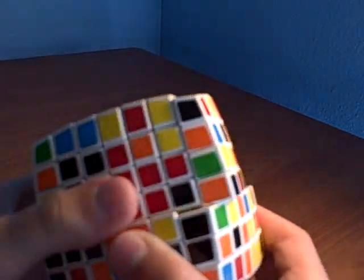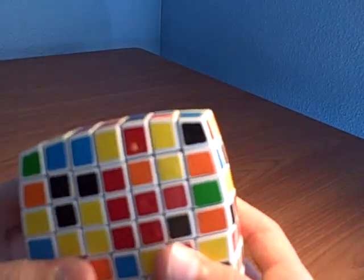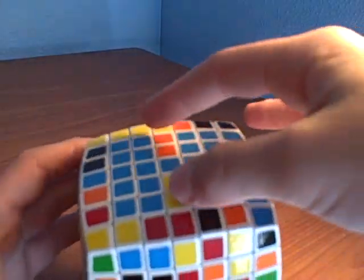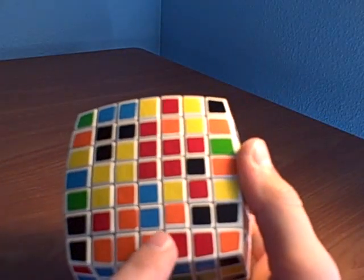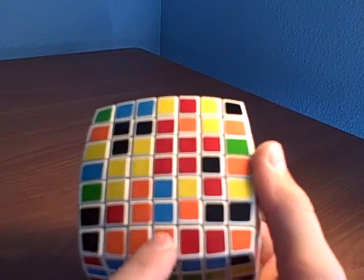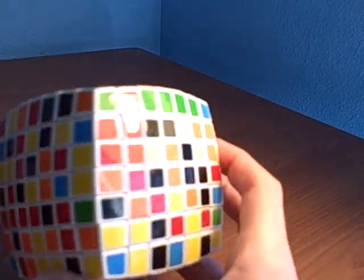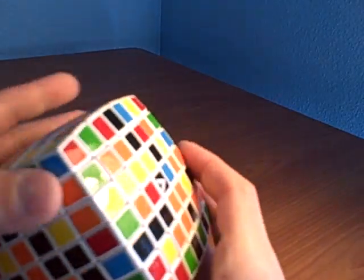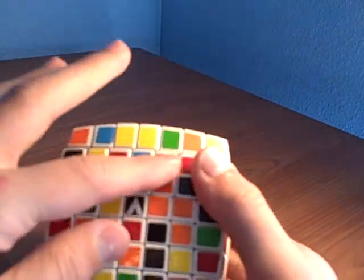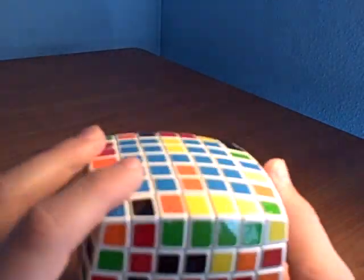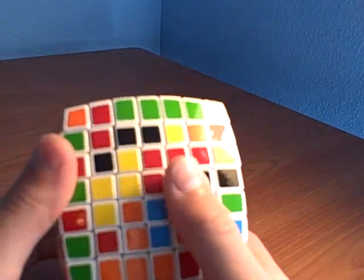Okay, since we can't bring this down without messing any of the green up, make little two bars like this. Okay, let me find the other two bar. Okay, see how we made little two bars?